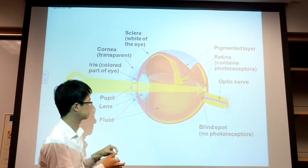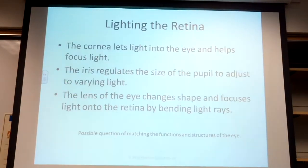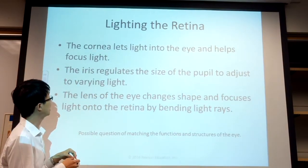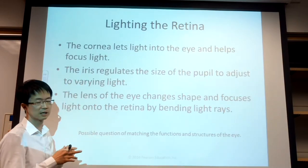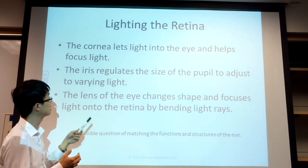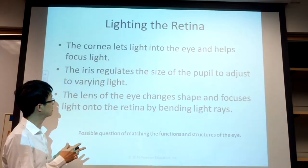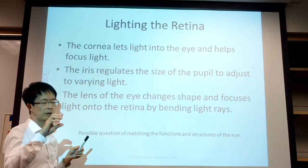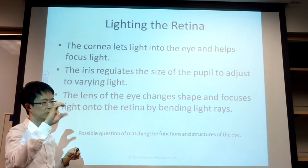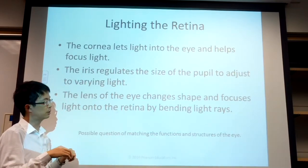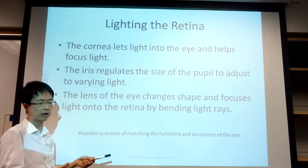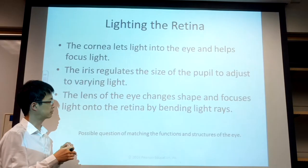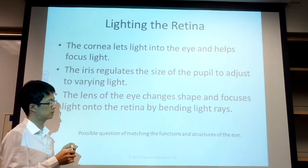This tells you the function of each part. The cornea lets light into the eye; it helps focus the light a little bit, but the major player to focus light is the lens. The iris regulates the size of the pupil to adjust to varying light. If you have strong light, your pupil size will constrict because the iris moves closer to decrease the size of the pupil. If you have dim light or a dark environment, your pupil will dilate because the iris moves apart. The lens changes shape to focus light on the retina.